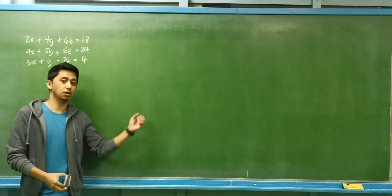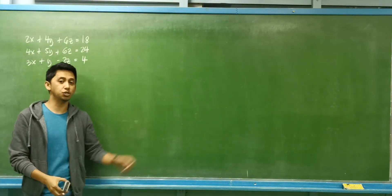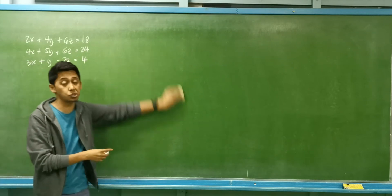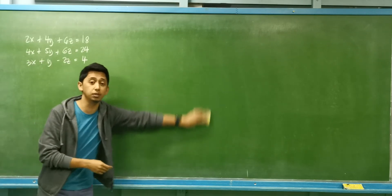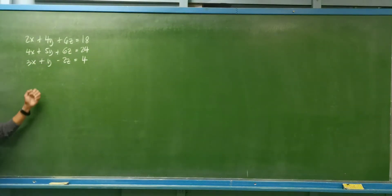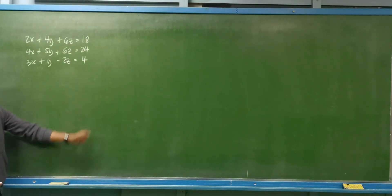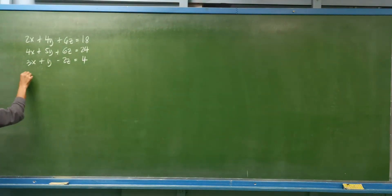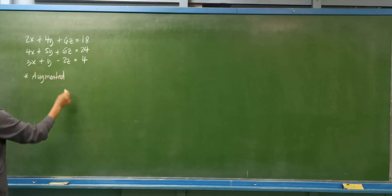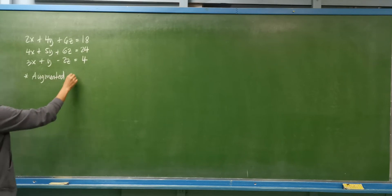Let's find the Gauss-Jordan elimination method. This method is used to solve systems of linear equations. We have these three linear equations and we have to use the Gauss-Jordan elimination method. First, we need to get the equivalent augmented matrix of these three equations.